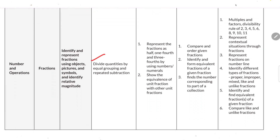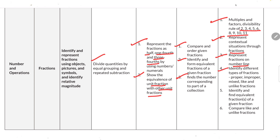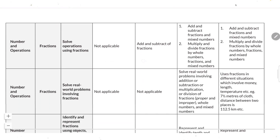Divide a quantity by equal grouping and repeated subtraction. Represent fractions as half, one-fourth, three-fourth using numbers or numerals. Show equivalence of unit fractions with other unit fractions. Compare and order given fractions. Identify and form equivalent fractions of a given fraction. Find the number corresponding to part of a collection. Apply divisibility rules for 2, 3, 4, 5, 6, 8, 9, 10, 11. Represent fractions on a number line. Identify different types of fractions: proper, improper, mixed, like, and unlike.